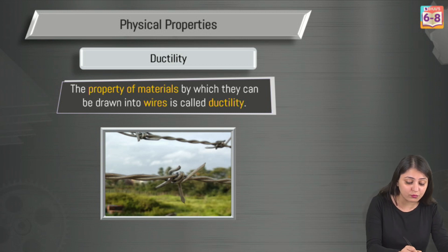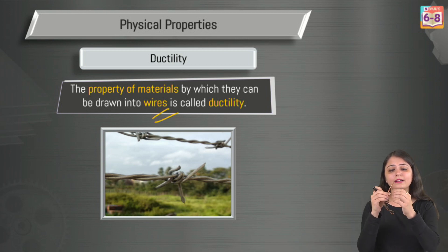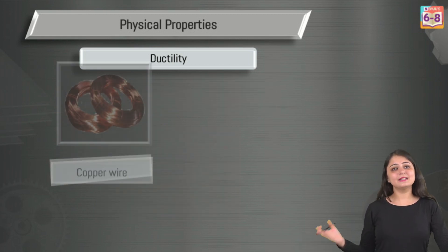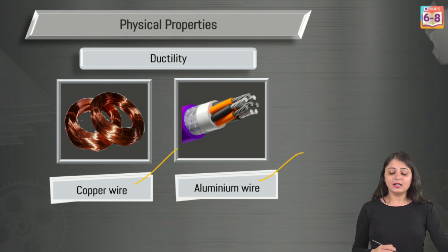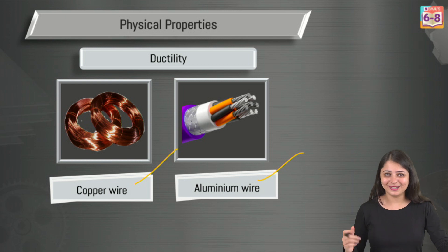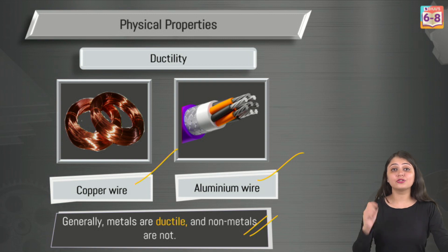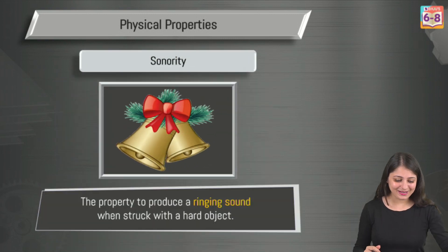The next important property is ductility — the ability to be drawn into wires, just like the copper wire I showed you. Metals are ductile; for example, copper and aluminium. Again, mercury is an exception — it's not ductile. Nonmetals are not ductile; they are actually brittle.